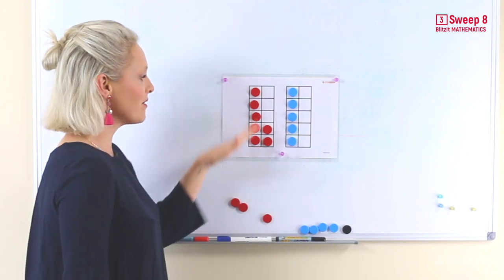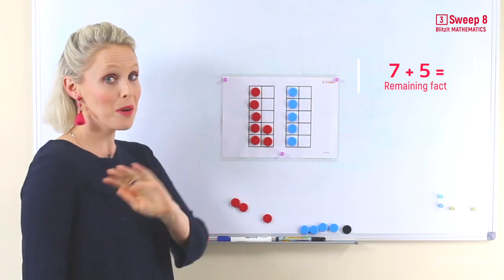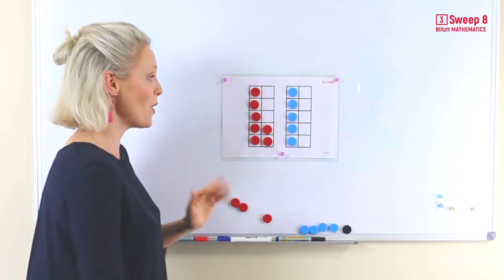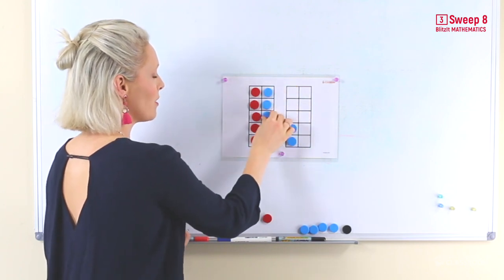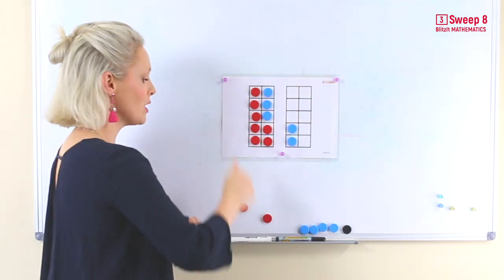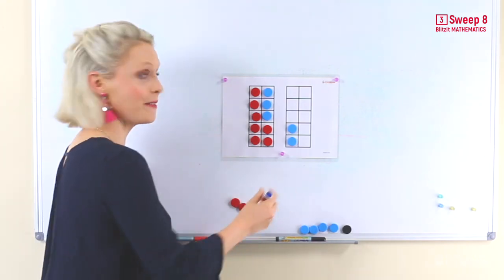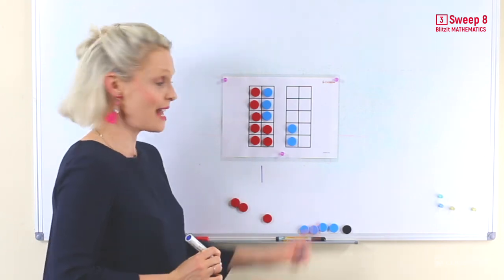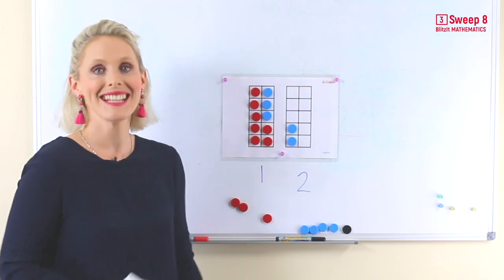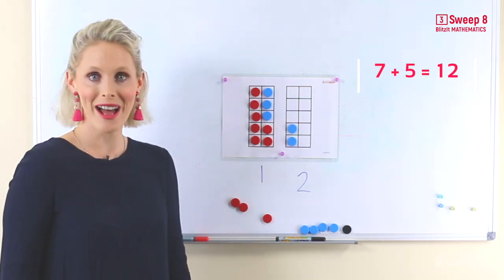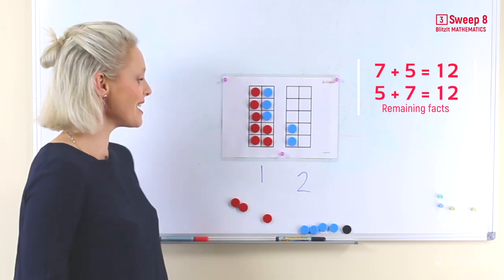So here we have 7 plus 5. Hmm, well we don't want to count with our fingers, do we? No. So we just move 3 over. 1, 2, 3. We take them away so that we can make a group of 10. We have one group of 10. That's right! 2 ones. 7 and 5 equals 12. And what's the turnaround? 5 and 7 equals 12.